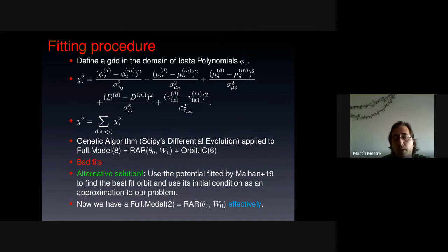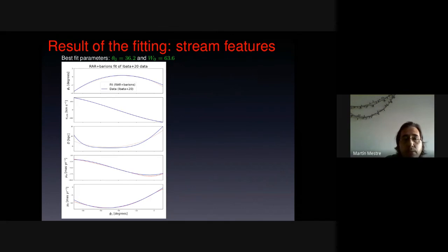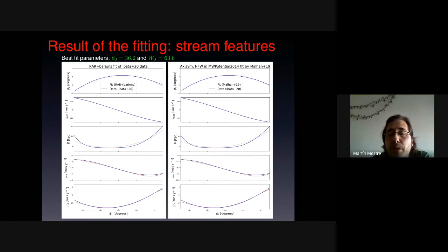And that worked. And now, because now we have a full model, which has got only two parameters effectively. And this worked. We found the theta zero, approximately 36, and W zero, 63. And here we can see the fit of the stream in red, and in blue is the Ibata polynomials, which are our data here. And we also can compare with the solution from the axisymmetric Milky Way potential, and they look very similar.